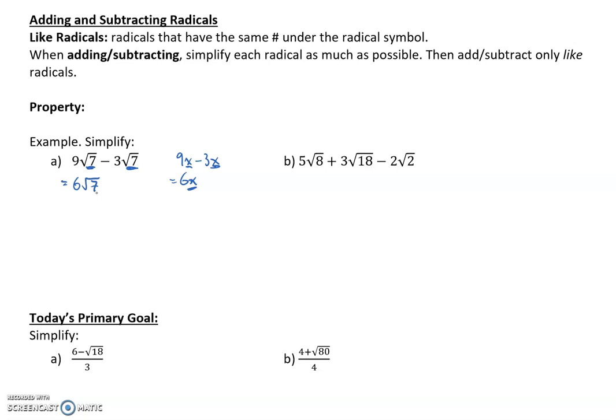Let's do another example: 5√8 + 3√18 - 2√2. We've seen √8 before. We know that √8 is the same thing as √(4×2), and the square root of 4 is 2.